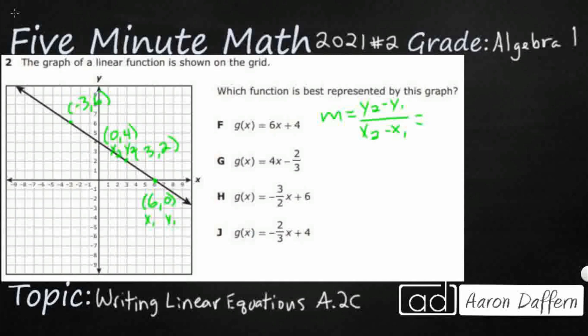So y2 is four, y1 is zero. See, four minus zero. And then x2 is zero, x1 is six. All right. So that's going to be four, negative six. So simplify that to negative two thirds.